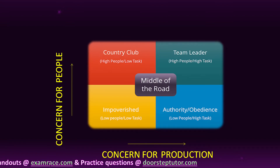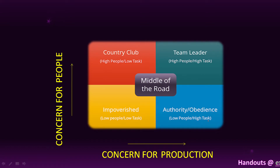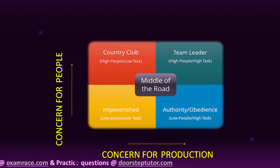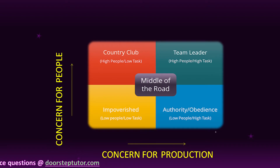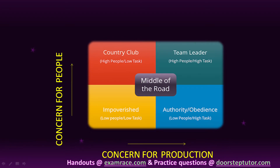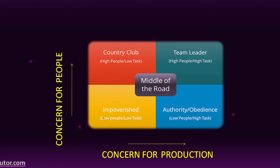The second style is Authority-Obedience, also called Task leadership style. It has low concern for people and high concern for task. On the grid it is positioned at (9,1) — x-axis at 9 means production/task is high, and y-axis at 1 means concern for people is low.